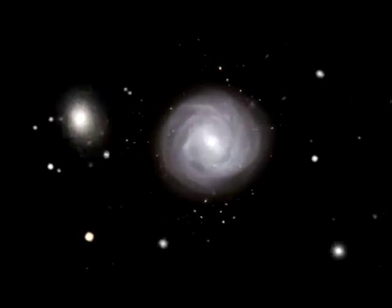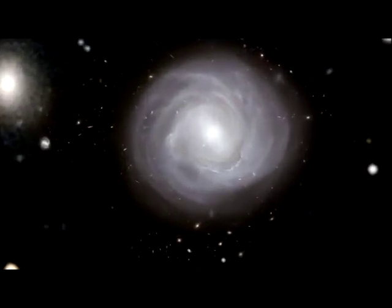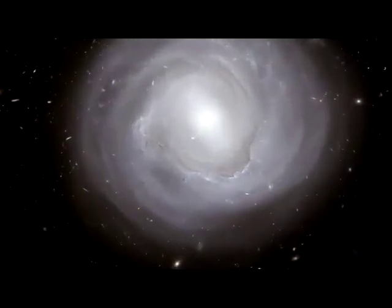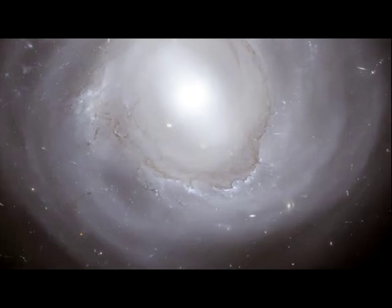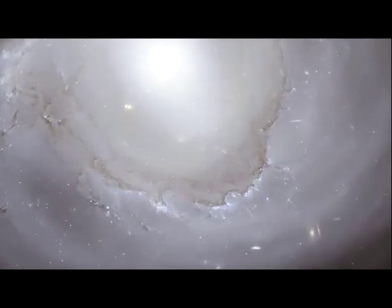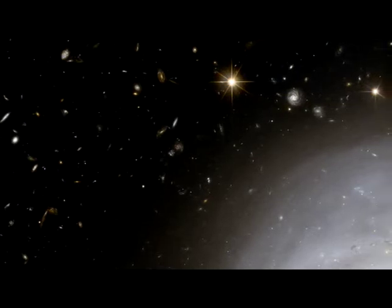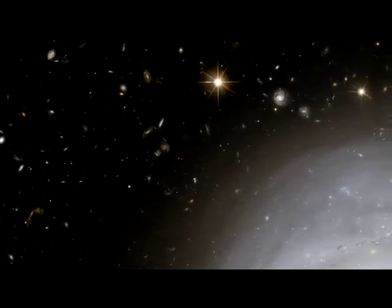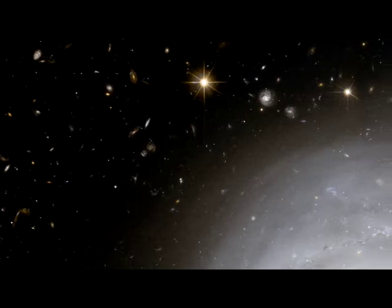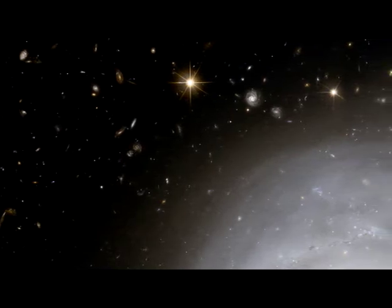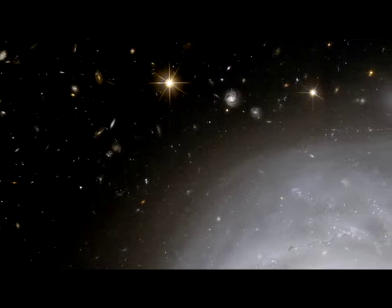Rich clusters like Coma are pretty crowded places and galaxies undergo many interactions and mergers. This constant slow activity gradually turns spiral galaxies, which are rich in dust and gas, into cleaner elliptical systems without much active star formation. As a result there are far more ellipticals and fewer spirals in the Coma cluster than are found in quieter corners of the universe.